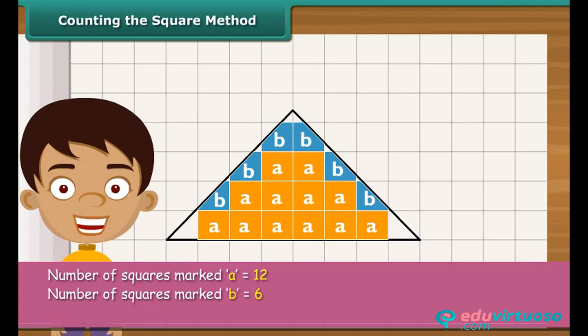Now count the squares whose exact half part is enclosed by the triangle. Mark each of these as C. Ignore the squares whose less than half part is enclosed by the triangle.